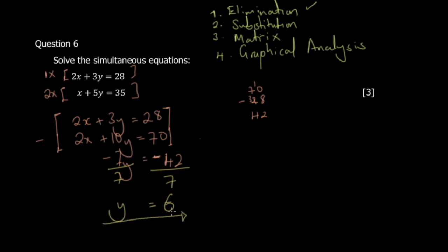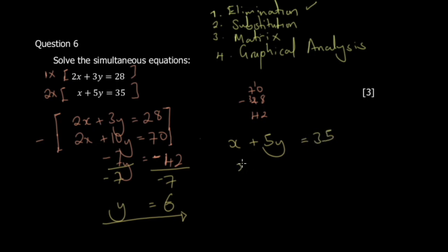Since these are simultaneous equations, we also need x. Choose the equation that computes fastest — the second one, since x is already on its own. Substituting y = 6: x + 5(6) = 35, so x = 35 − 30 = 5.